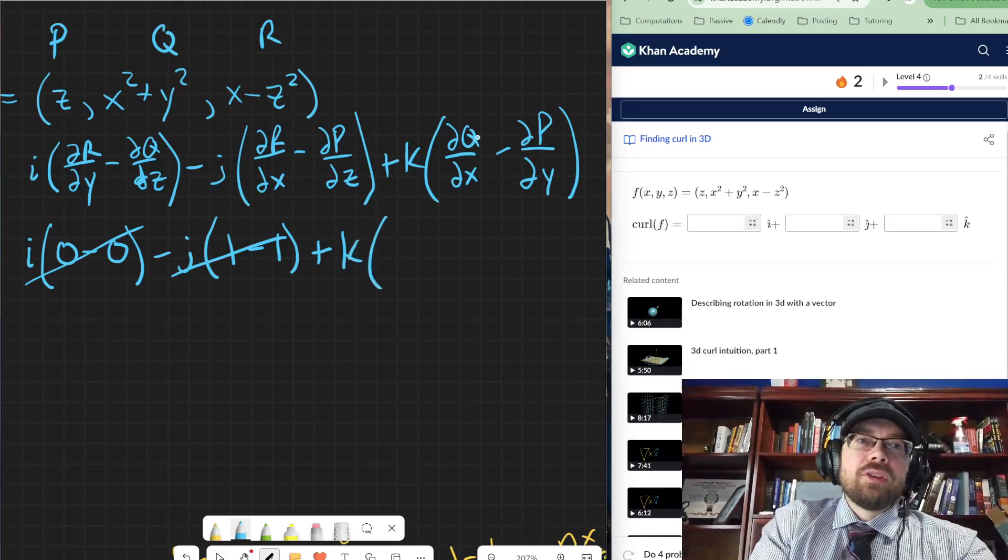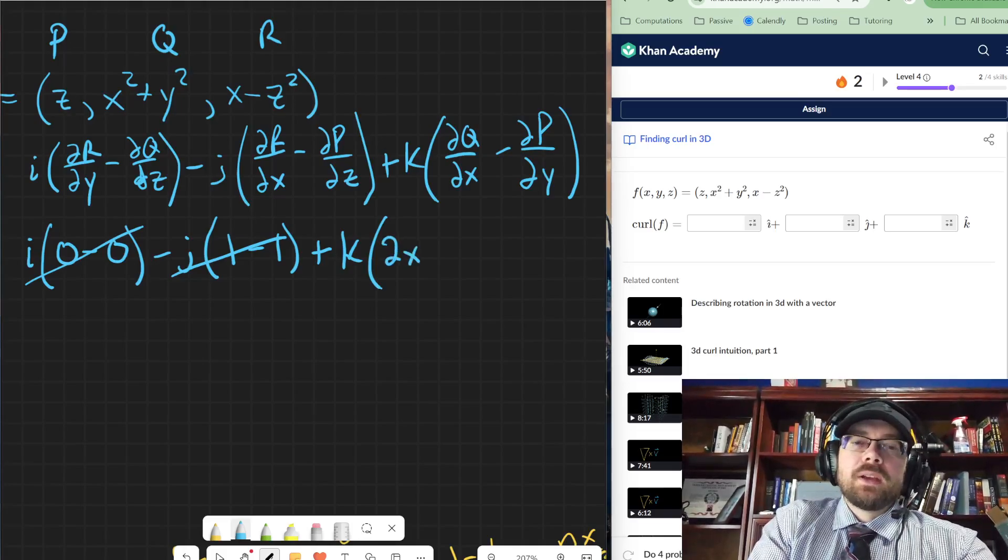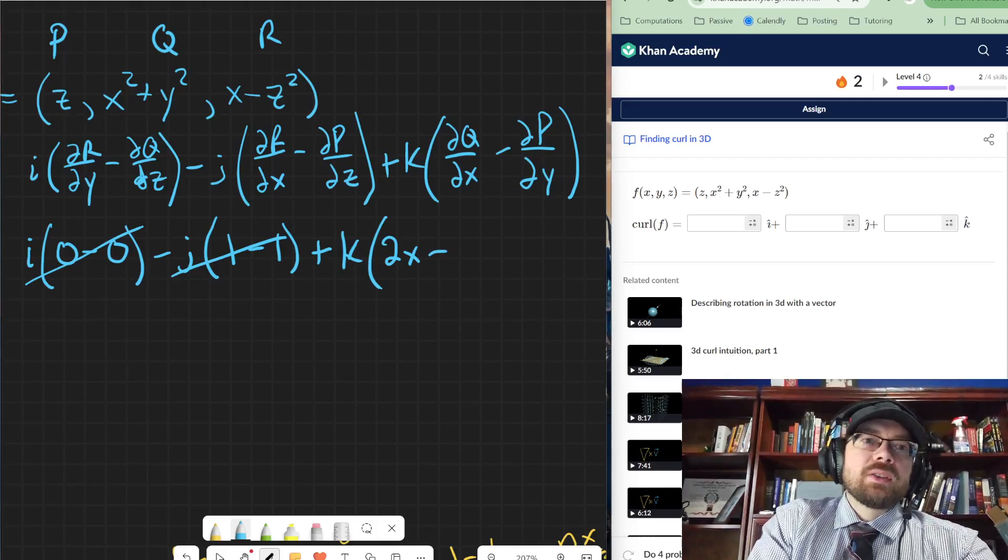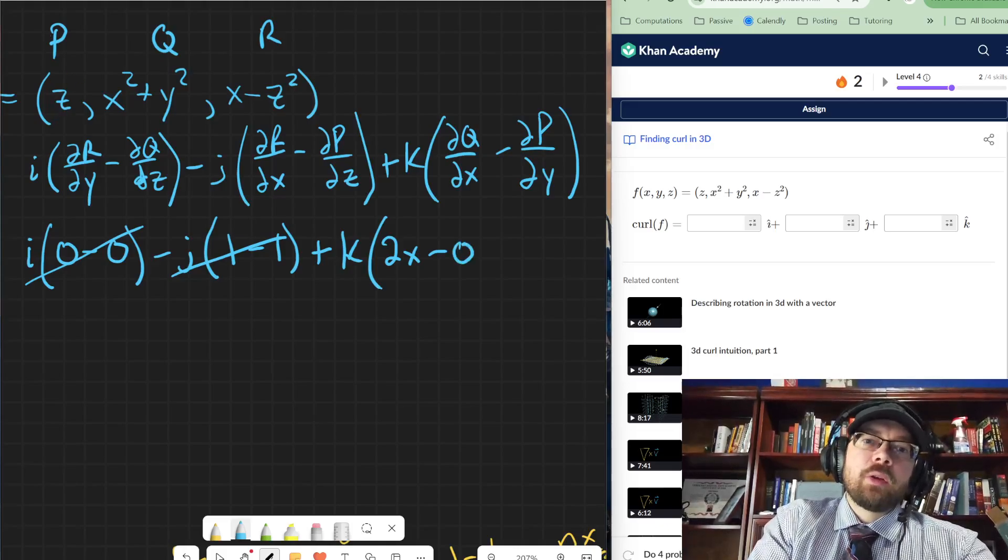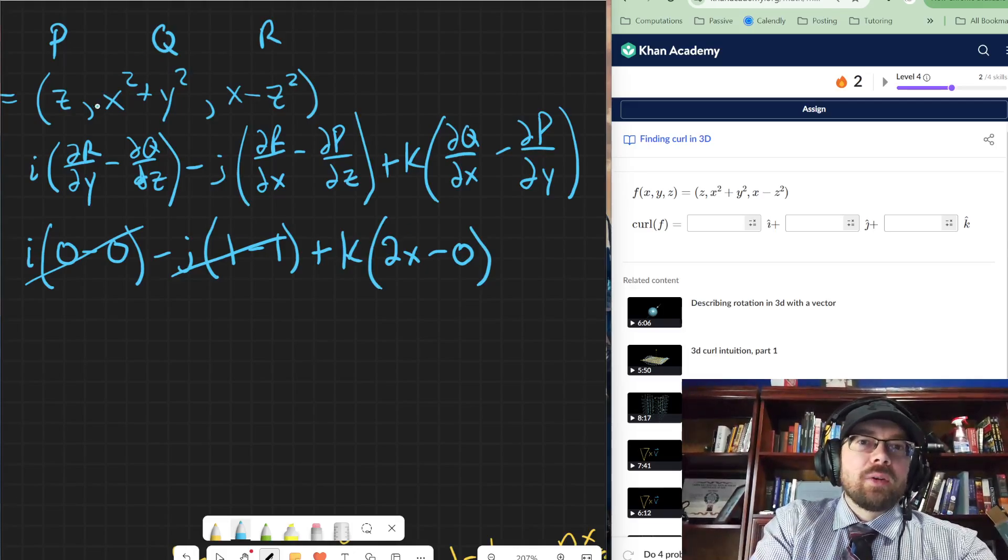Let's see. Partial of q with respect to x. That's going to be two x. And then minus partial of p with respect to y. There's no y variable there, so that would be a zero. So it looks like we almost got zero, but this one ended up being two x. Let me double check that real quick. So partial of q. Yeah. That looks good.